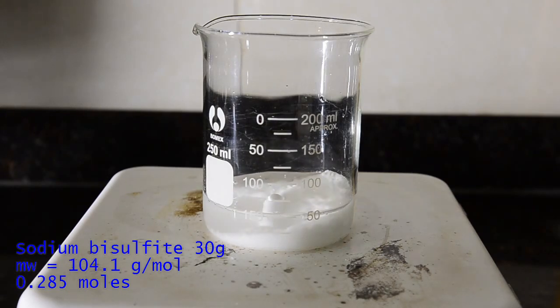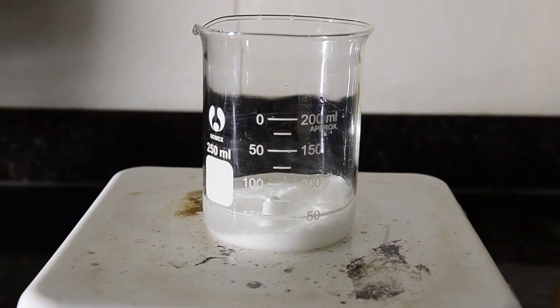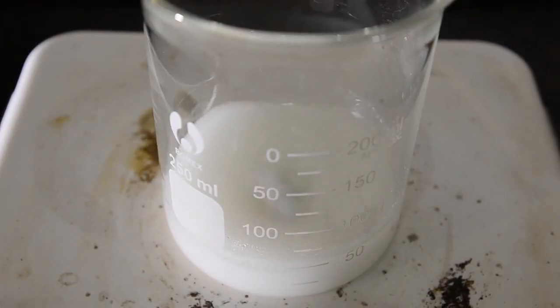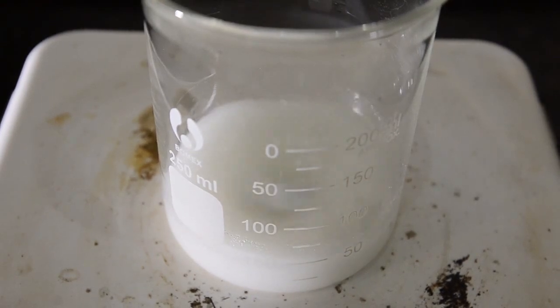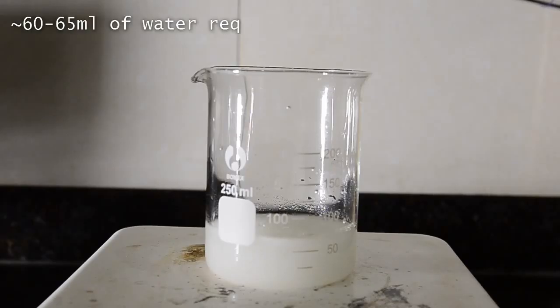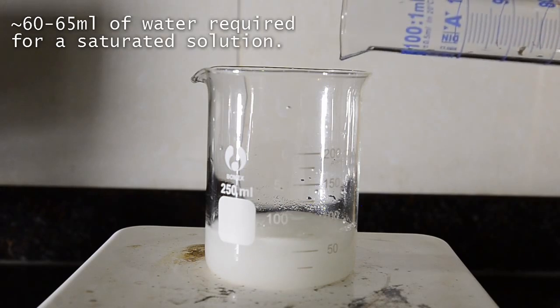Add a stir bar and then add 50 milliliters of water. We need to dissolve the bisulfite in order to make a saturated solution. Stir well and add water as needed to dissolve, but go slowly as the dissolution will take some time.